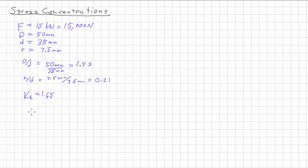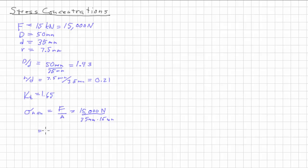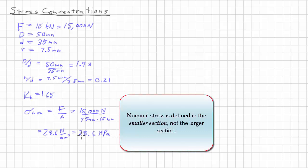Now we've got K_T of 1.65. If we were just in the smaller section of our part, we would calculate the nominal stress as force over area: 15,000 newtons divided by 35 millimeters times the thickness of 15 millimeters, which calculates out to 28.6 newtons per square millimeter. A newton per square millimeter is simply a megapascal, so that's our nominal stress in the bulk of the smaller section.